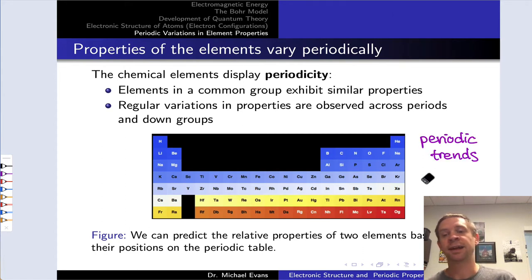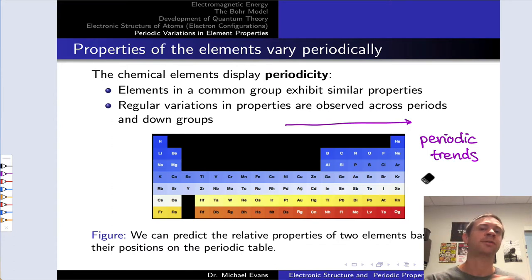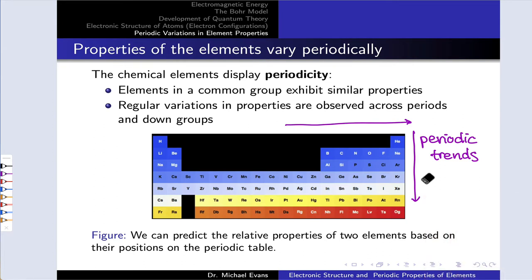These consistent variations are known as periodic trends. We tend to think about them as involving movements from left to right across the periodic table or top to bottom down a group. What these periodic trends allow us to do is predict the relative properties of two elements based on their positions on the periodic table. That's highly useful because we can draw analogies and extend our knowledge.